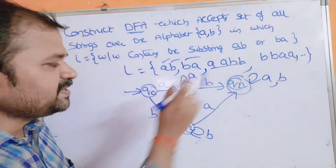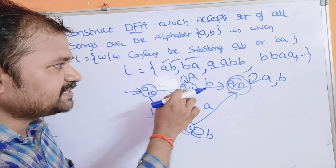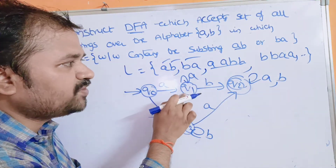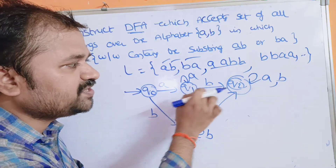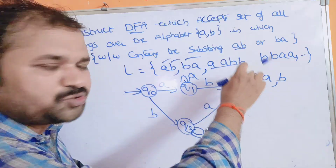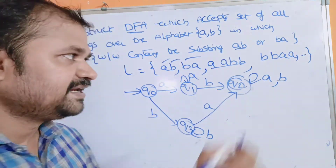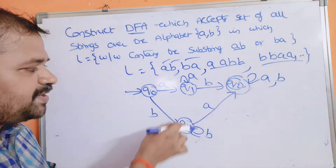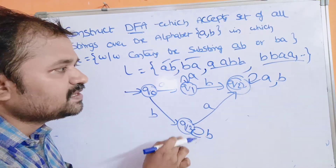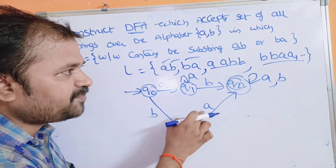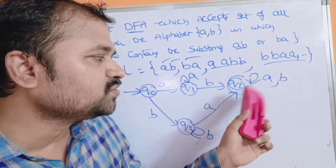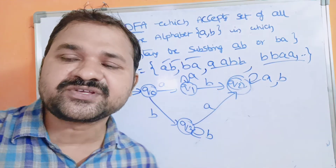For AABB: apply A on Q0 → Q1, apply A on Q1 → stay at Q1, apply B on Q1 → Q2, apply B on Q2 → stay at Q2. Q2 is the final state, so AABB is accepted. For BBAA: apply B on Q0 → Q3, apply B on Q3 → stay at Q3, apply A on Q3 → Q2, apply A on Q2 → stay at Q2. Q2 is the final state, so BBAA is accepted.